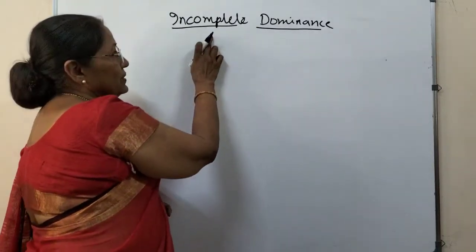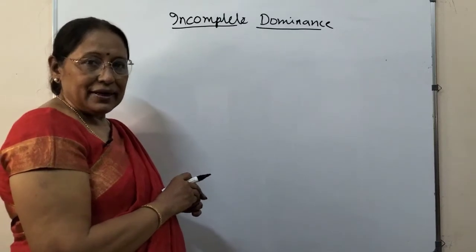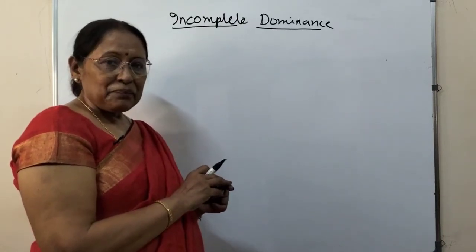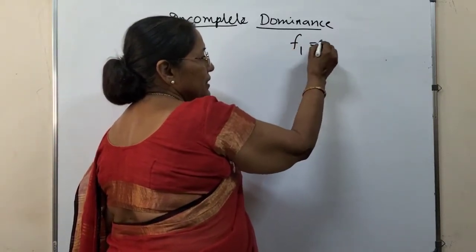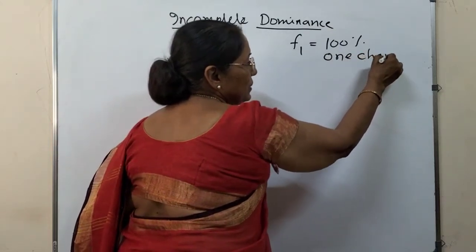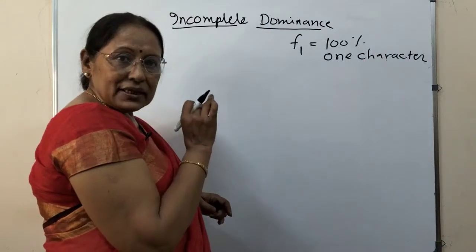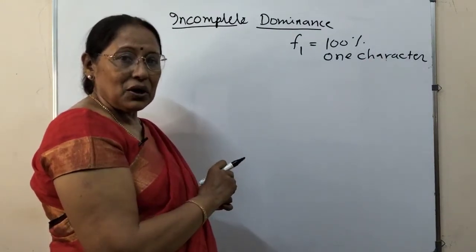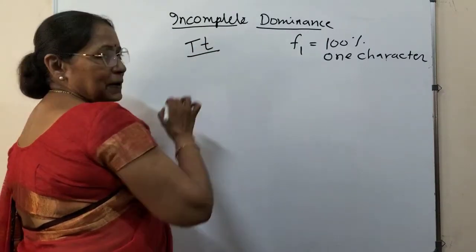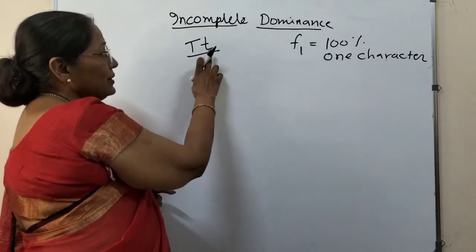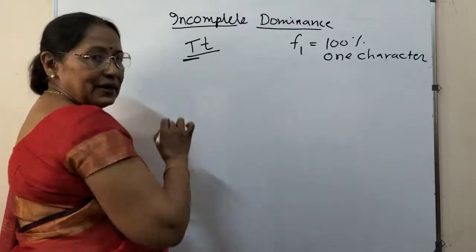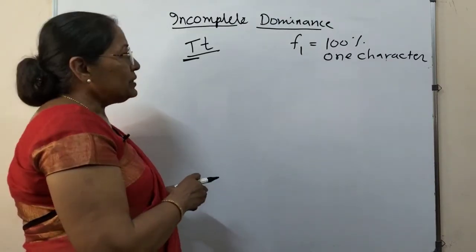What is incomplete dominance? From the name itself, incomplete dominance. When Mendel did his experiments, what he found out? When he crossed two pure plants showing contrasting characters, then in F1 generation, 100% offspring showed only one character. Based on this observation, Mendel had given the law of dominance, which says that when the two factors are different, for example capital T and small t—this T is for tall height and this one for short height—when two are together, then only one of it is expressed in the first filial generation.